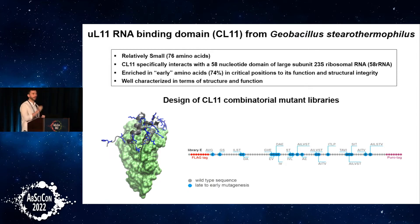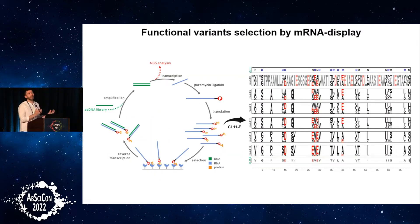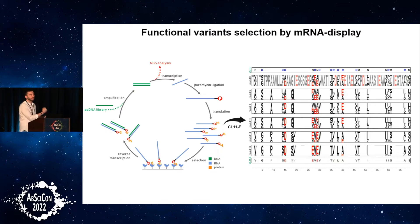We generated our library, randomizing every late amino acid position with a set of early ones, obtaining a library of around 10 to the power of 10 variants. To select from this large library, we used mRNA display — a selection method that links genotype to phenotype through puromycin, so the protein is bound to its own mRNA. Once a variant is selected, we can sequence it through its mRNA. The general pipeline goes from DNA library to in vitro transcription, ligation to puromycin, in vitro translation, obtaining a protein library linked to the RNA.